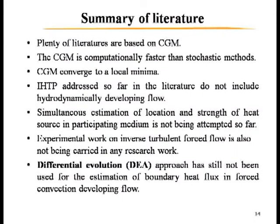From the literature summary, various researchers have applied the conjugate gradient method to solve inverse heat transfer problems. CGM is computationally fast because it uses gradient information, but it may converge to local minima since it starts with a single solution. Stochastic methods start with many solutions, giving a higher probability of reaching global optimization. Hydrodynamically developing flow is not considered in the literature — however, I have one publication on this. Simultaneous estimation of location and strength of a heat source in a participating medium is also not addressed in the literature, and I have one publication on this issue.